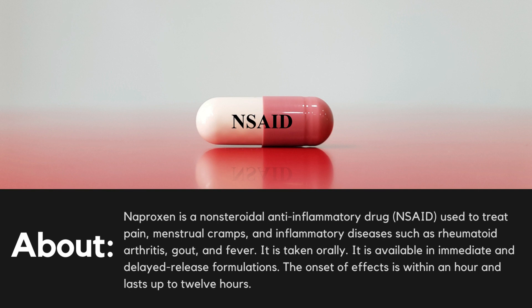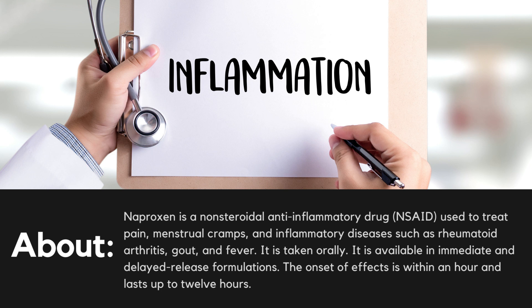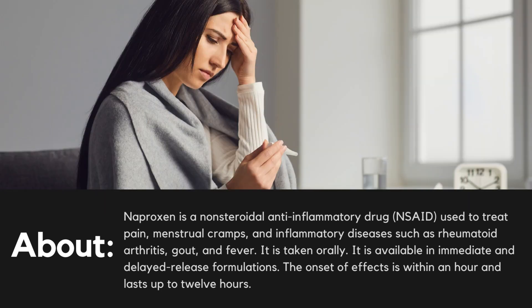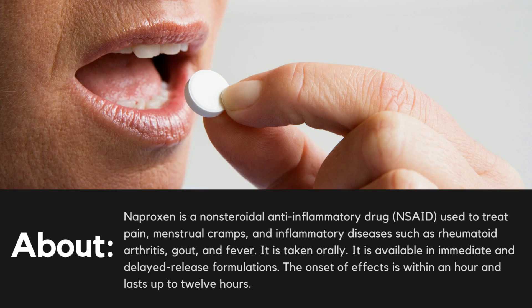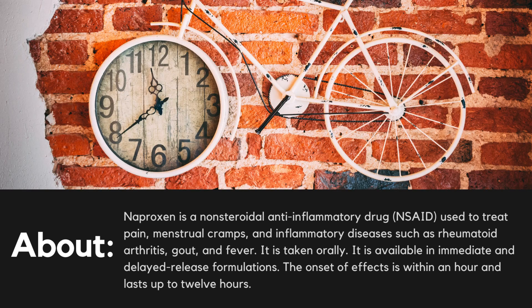About. Naproxen is a non-steroidal anti-inflammatory drug (NSAID) used to treat pain, menstrual cramps, and inflammatory diseases such as rheumatoid arthritis, gout, and fever. It is taken orally. It is available in immediate and delayed-release formulations. The onset of effects is within an hour and lasts up to 12 hours.